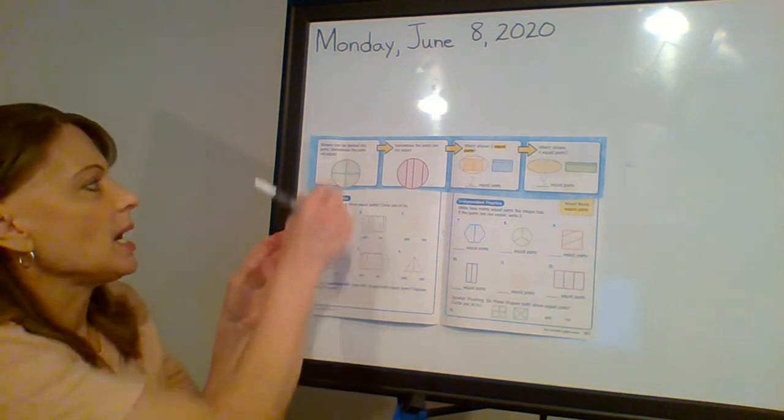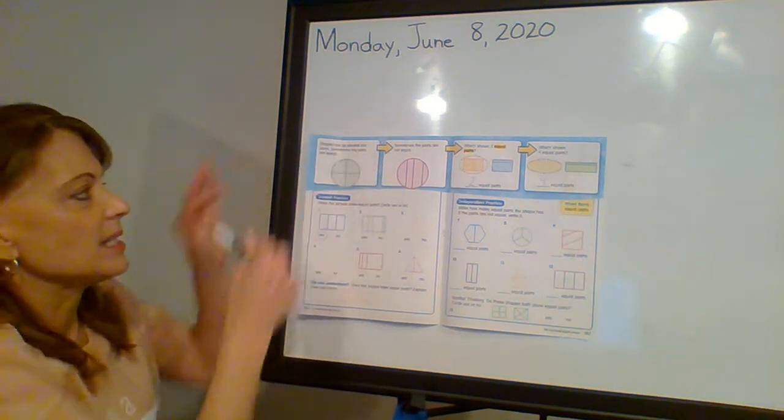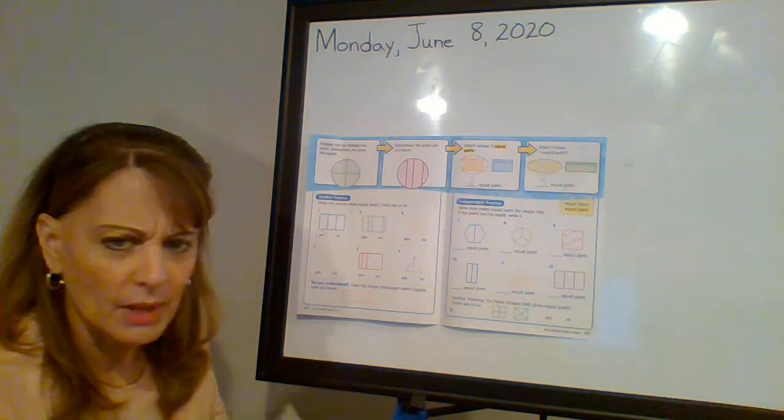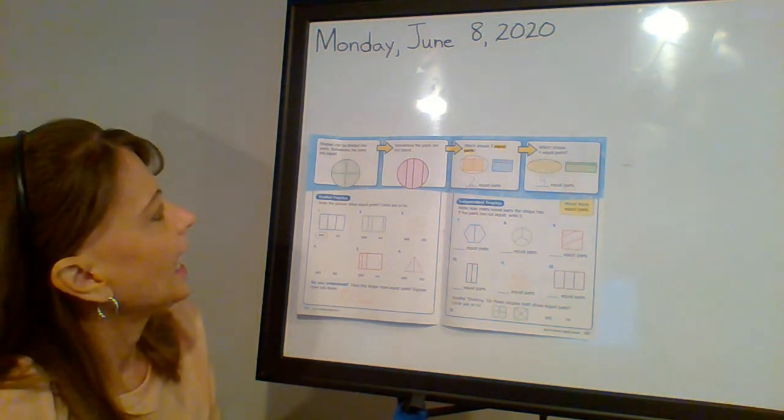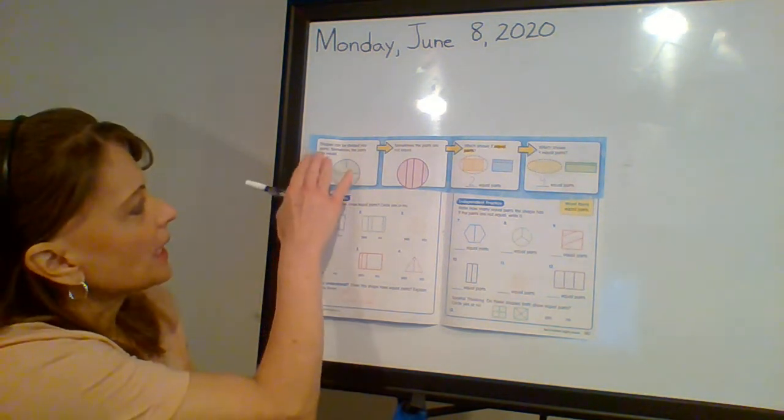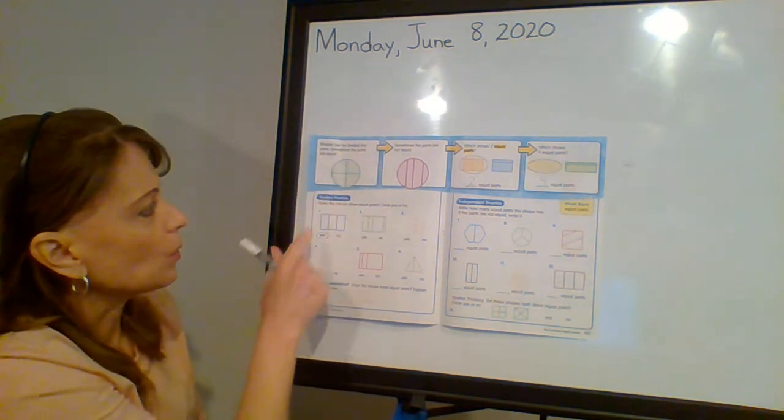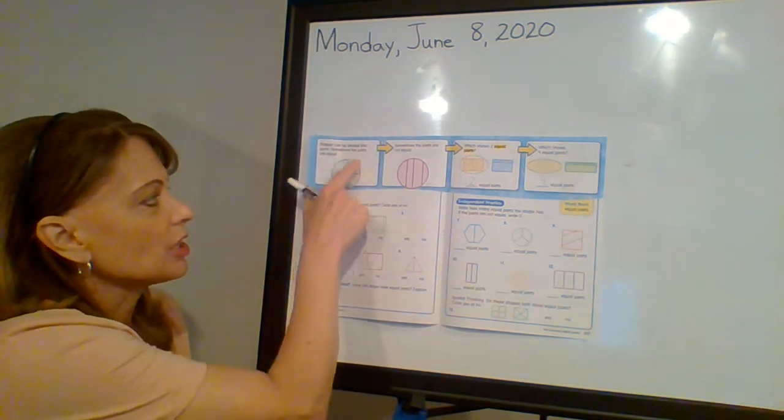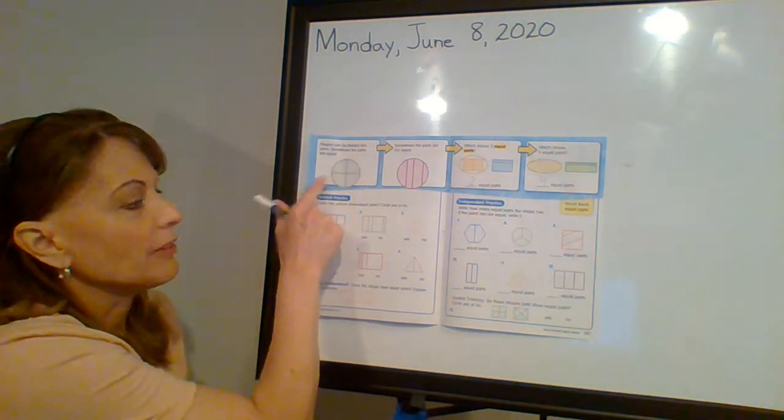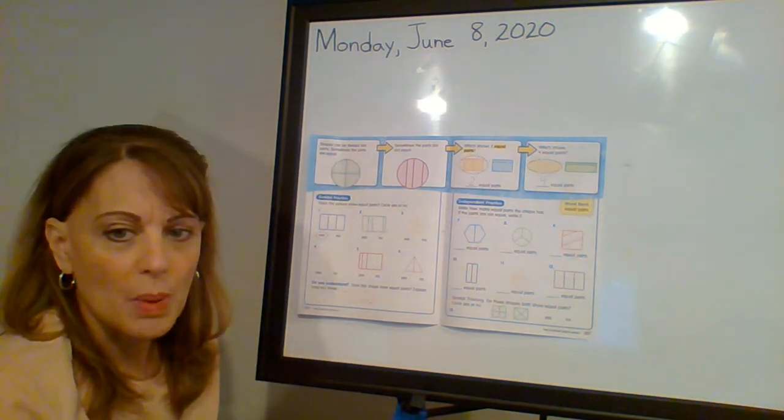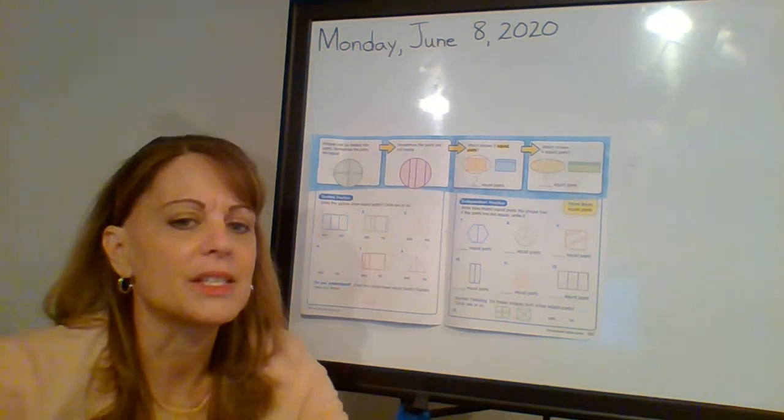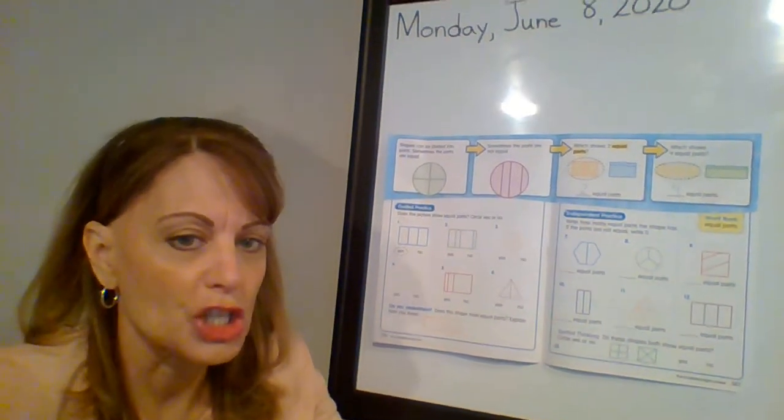So open up. This is 19-1. Open it right up to the middle. And it says, shapes can be divided into parts. Sometimes the parts are equal. So if you look at this circle, that's been divided into one, two, three, four parts. Those parts are exactly the same size and shape.